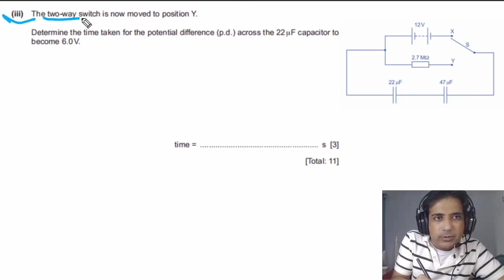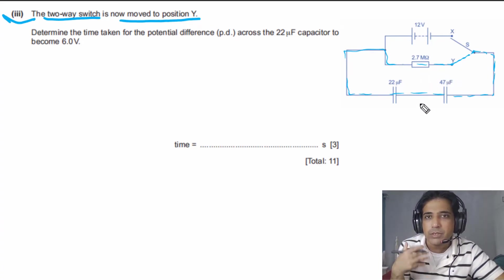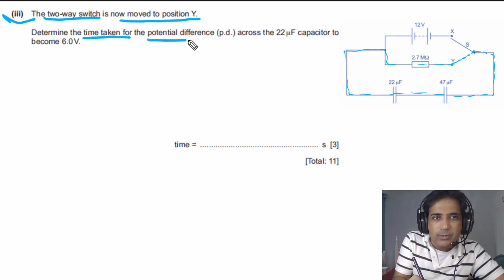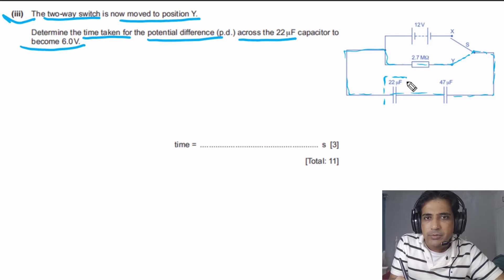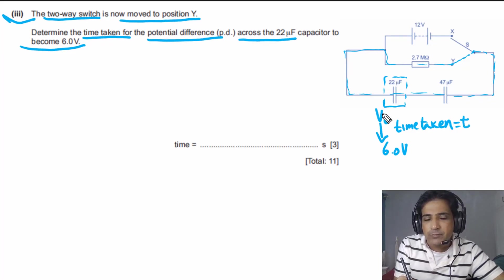For the last part, the switch is moved to position Y. With no power supply in the circuit, the charged capacitor begins to discharge through the resistor. We need to determine the time taken for the potential difference across the 22 μF capacitor to fall to 6.0 V. We need to find the initial voltage V₀ across the 22 μF capacitor first.